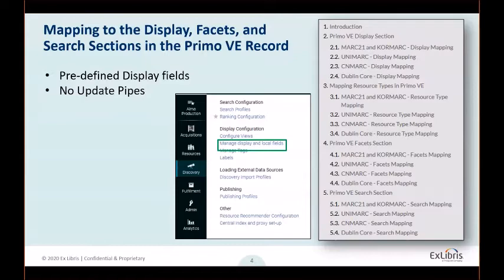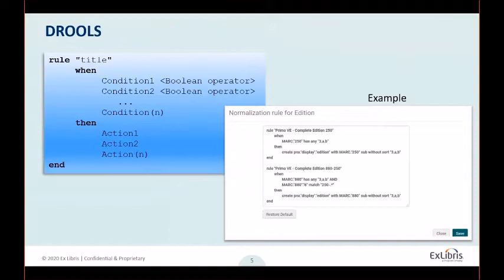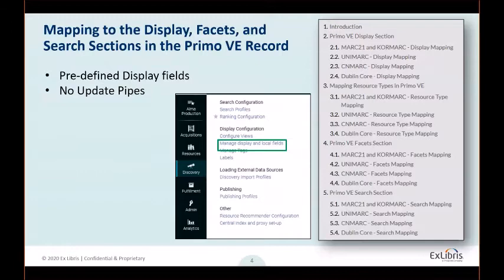There is, however, one specific scenario where records are required to be re-indexed in order for search normalization rules to take effect. This will be discussed in our next GoVE become-an-expert session. If you Google 'PRIMO V mapping,' the first result will lead you to a documentation page that lists the full default mapping for display, search, facet, and resource types for main MARC format standards in addition to Dublin Core.